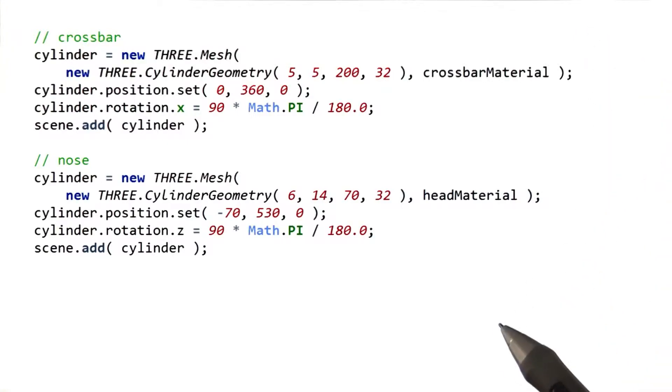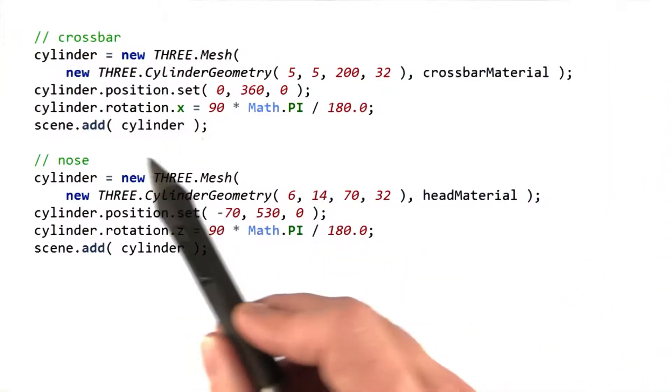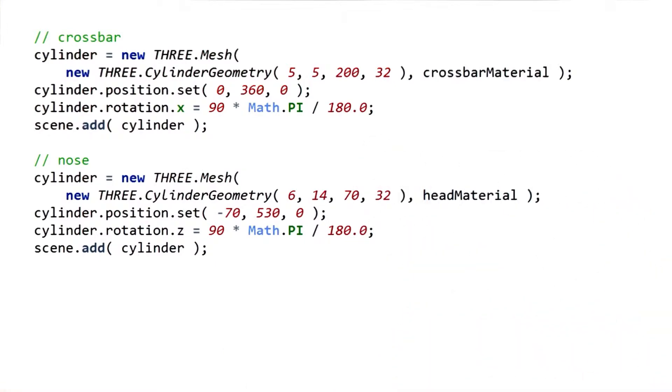The solution for the drinking bird's crossbar and nose are nothing special. You set the position, you rotate it by 90 degrees, and you're pretty much done.